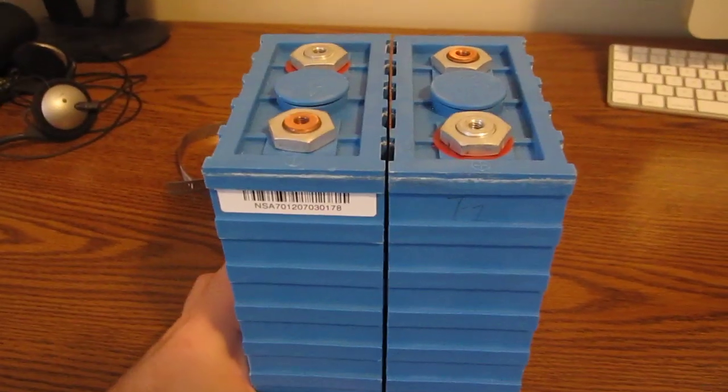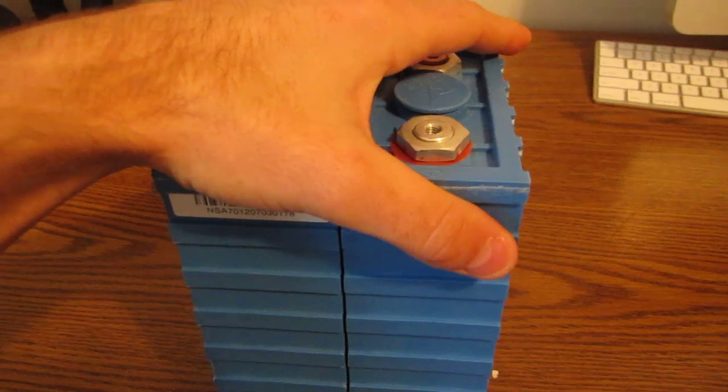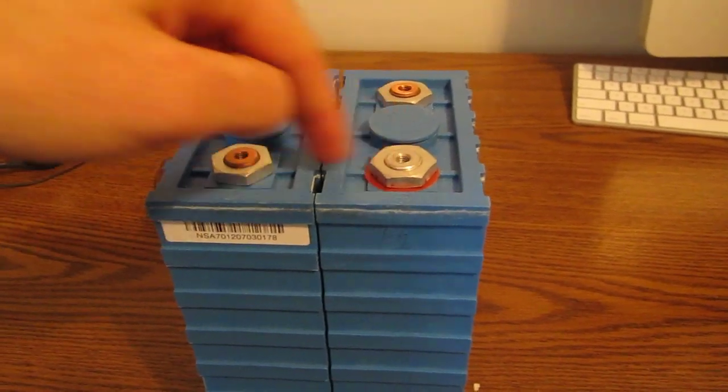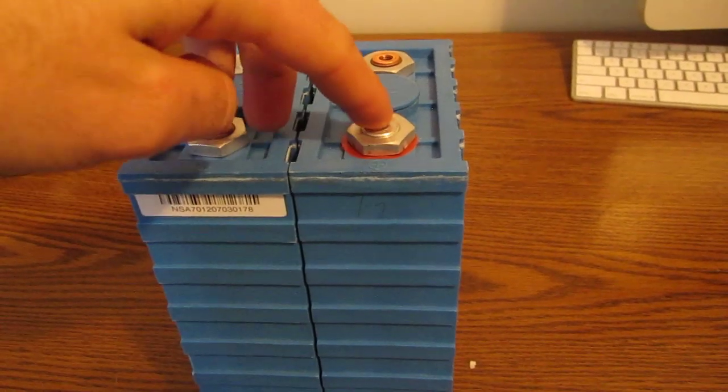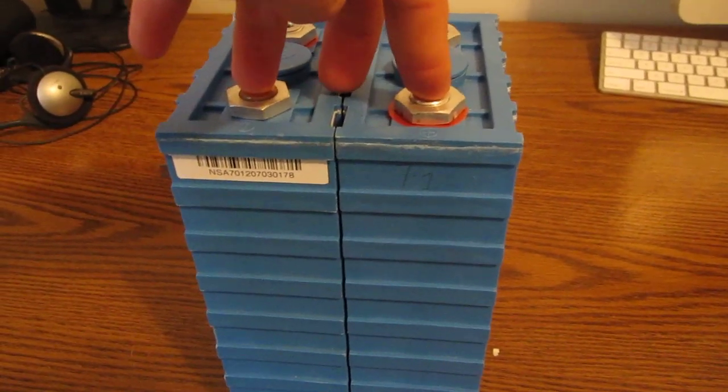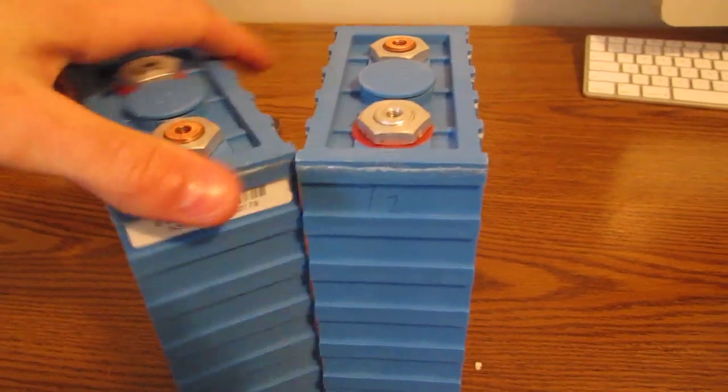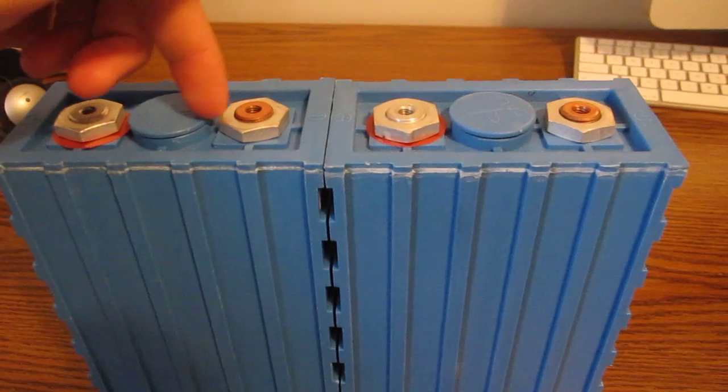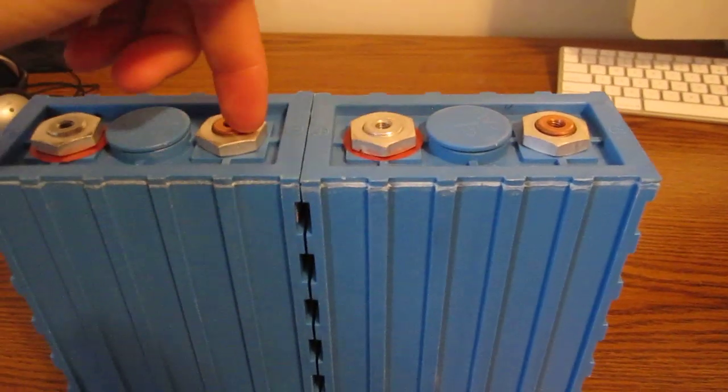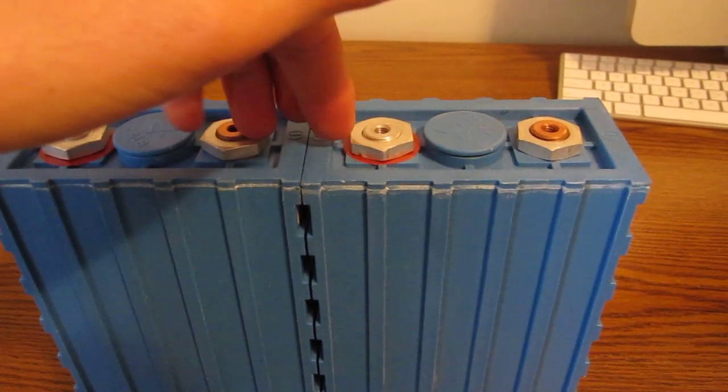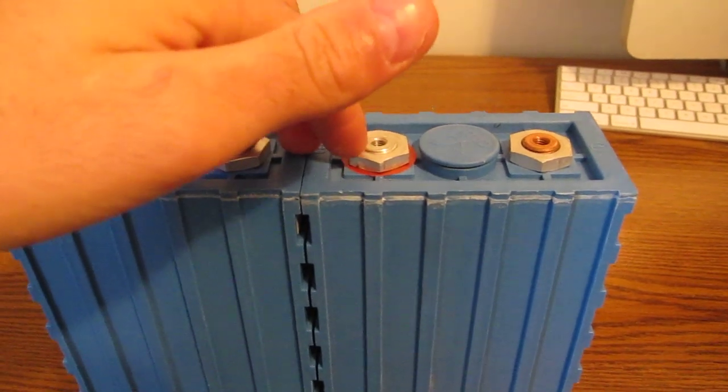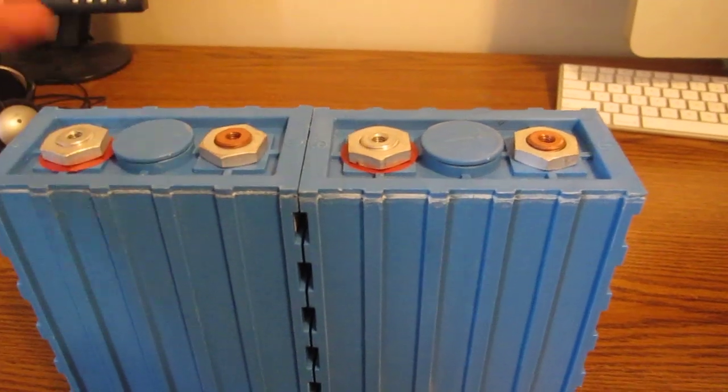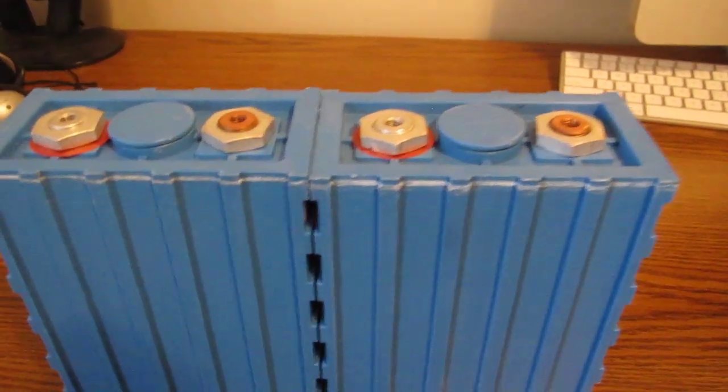One problem is that with these cells, the way they're designed, the center to center distance across here is perfect for the tabs. It's 2.38 inches, if I recall. But if you turn the cells like this, then the center distances between these two points here is actually closer together now. You actually need a different bar to interconnect the cells this way. That's a bit of a problem, but it's not a big deal.